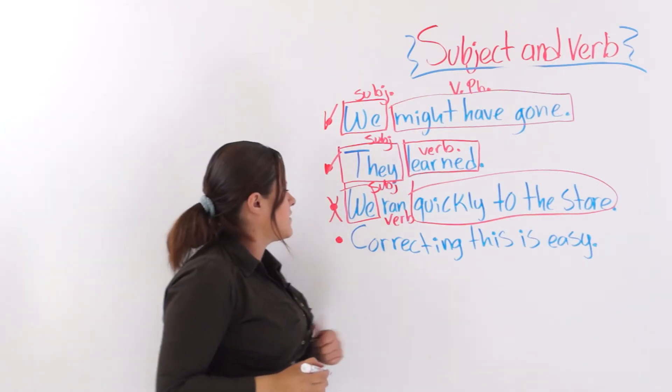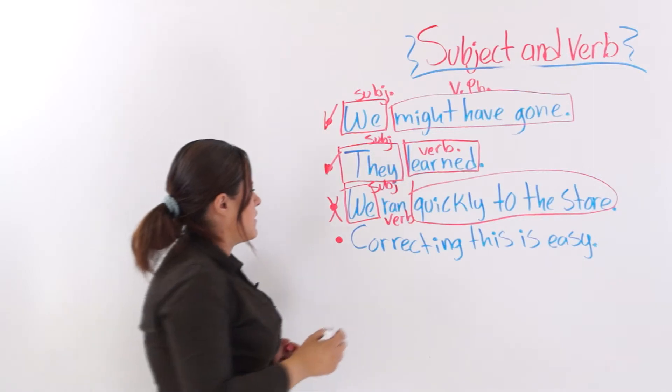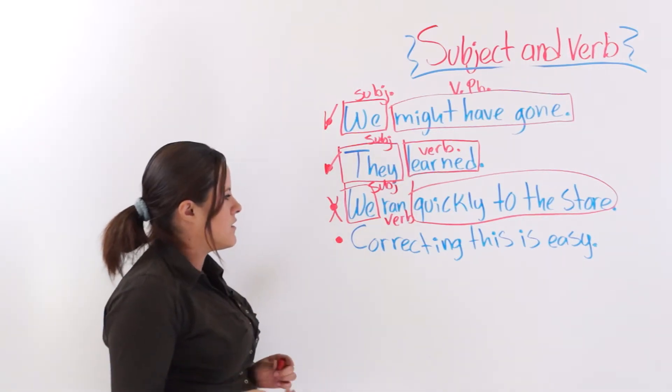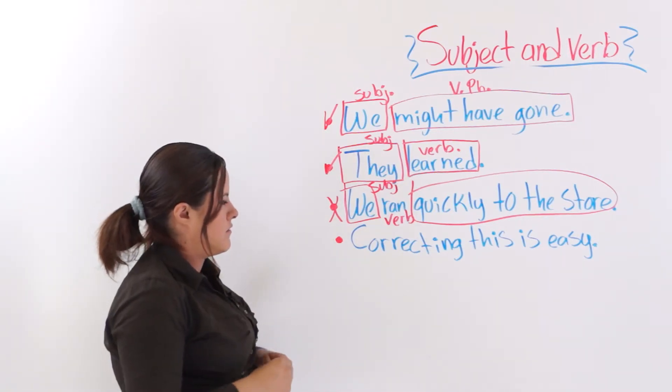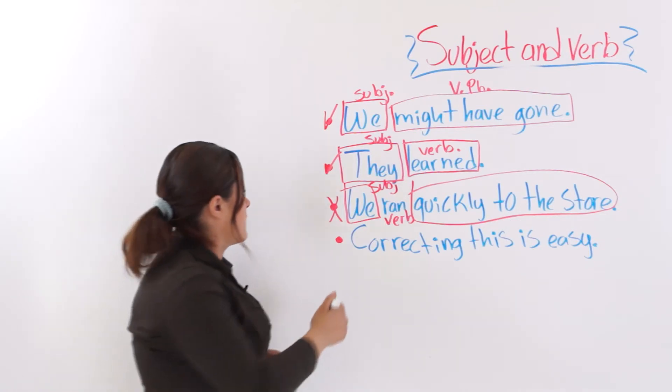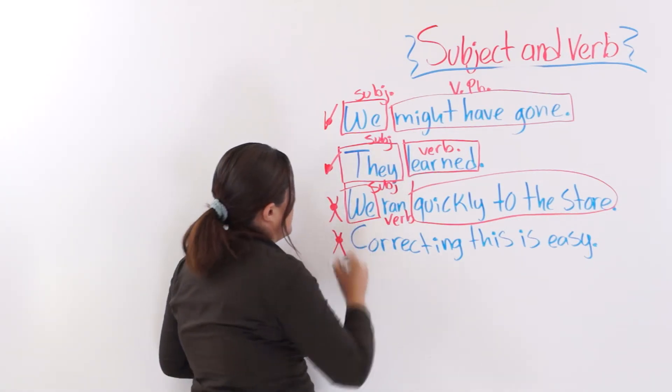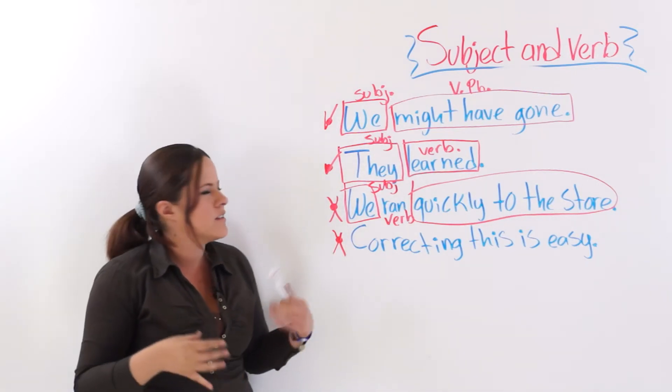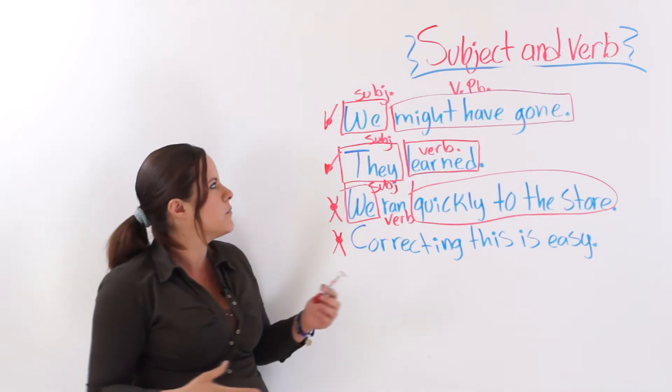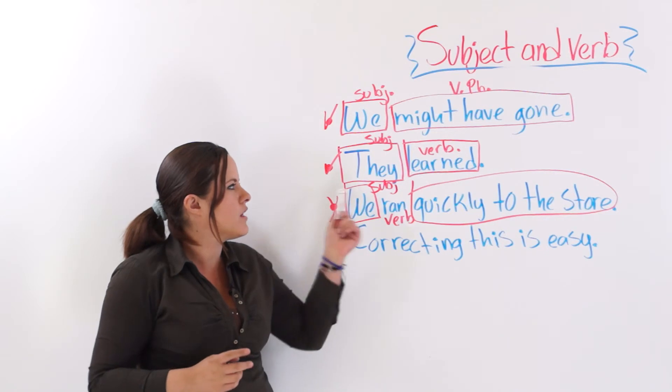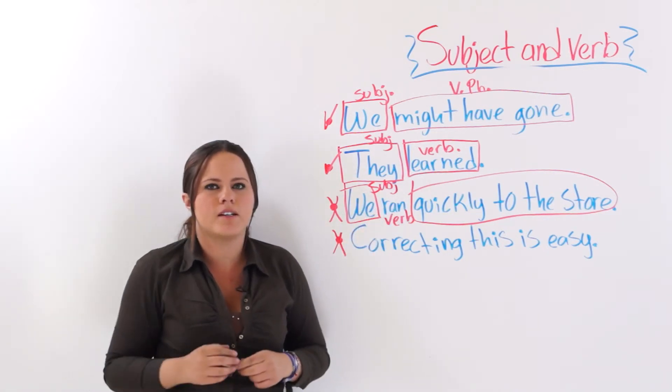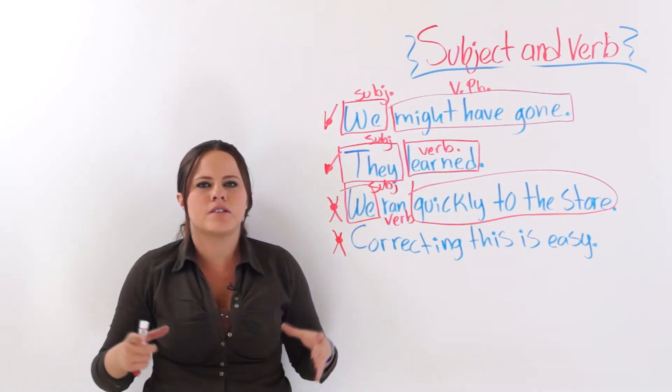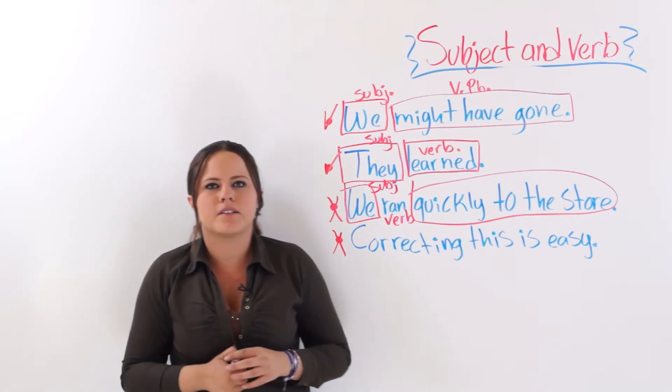And this last one says, correcting this is easy. Correcting this is easy. What do you think? No. It's not a subject and verb sentence either. Subject and verb sentences are very simple. We might have gone. They learned. You ran. And they make perfect sense by themselves as a sentence.